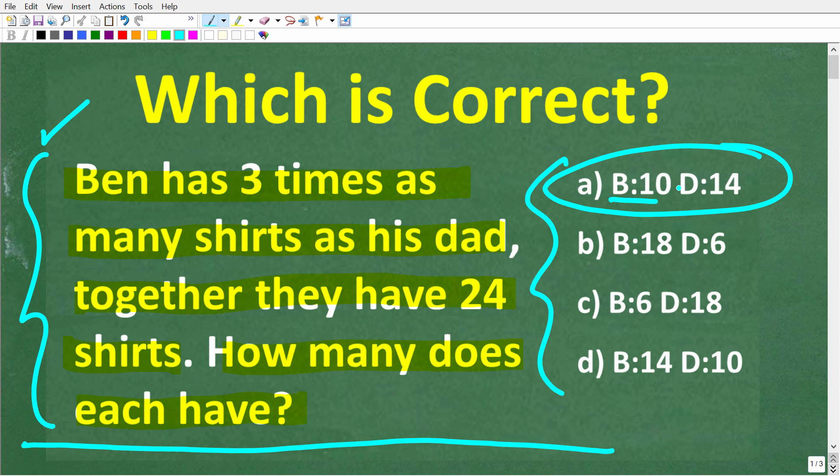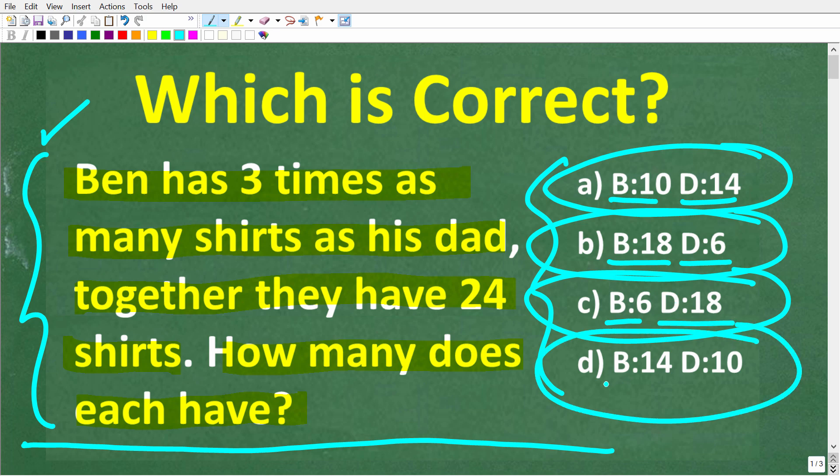A is Ben has 10 shirts and his dad has 14. B is Ben has 18 shirts and his dad has 6. C is Ben has 6 shirts and his dad has 18. And D is Ben has 14 shirts and his dad has 10.